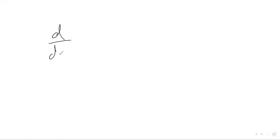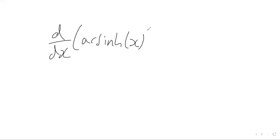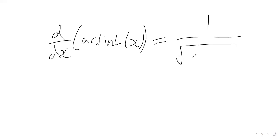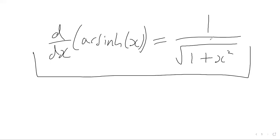In conclusion, when we differentiate arsinh(x), the inverse hyperbolic sine function, the result is 1 over the square root of (1 + x²), for all values of x. That is the final result.